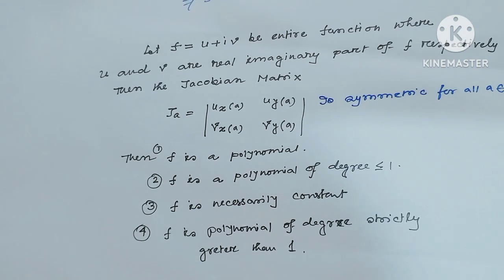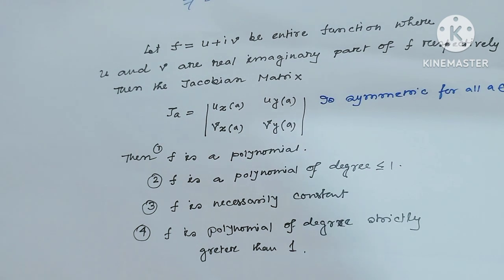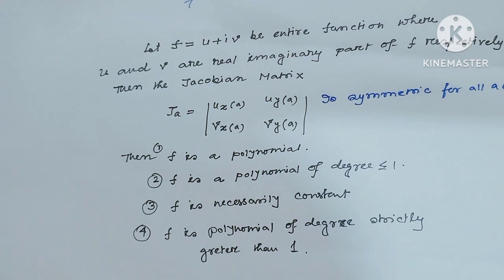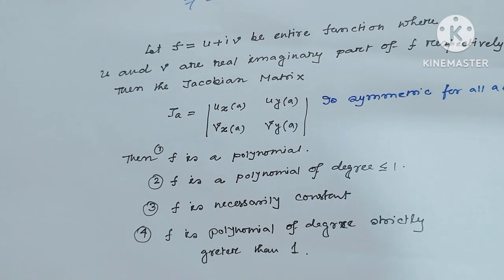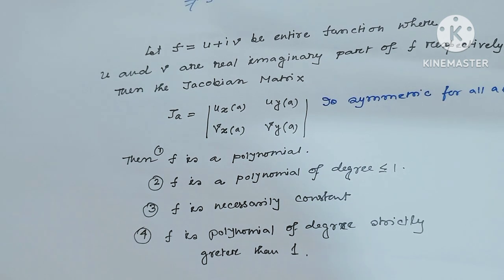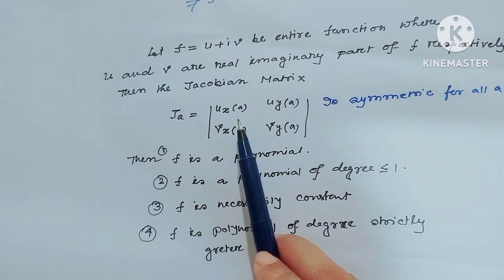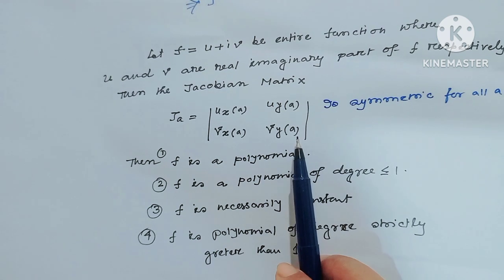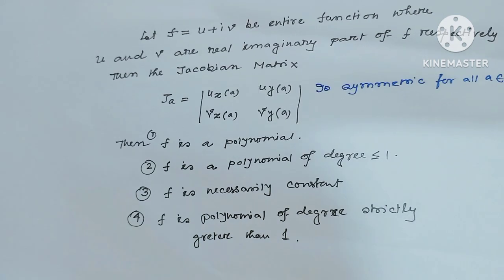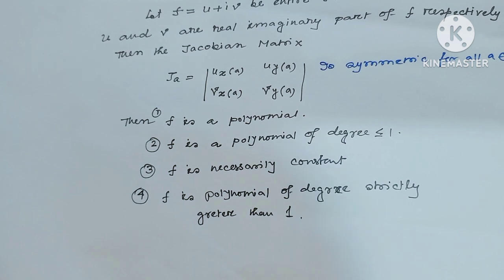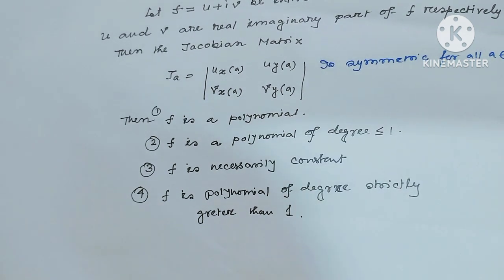Next, a nice example from the CSIR NET exam. Let F = U + iV be an entire function where U and V are the real and imaginary parts respectively. Consider the Jacobian matrix at point A: [U_x(A), U_y(A); V_x(A), V_y(A)]. The options are: (1) F is a polynomial; (2) F is a polynomial of degree ≤ 1; (3) F is necessarily constant; (4) F is a polynomial of degree strictly greater than 1. Given that this Jacobian matrix is symmetric for all A in ℂ.